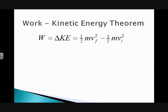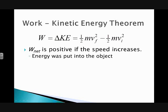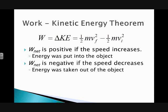The net work is positive if the speed of the object increases. That means energy was put into the object. If you put energy into it, it's going to go faster, it's going to have more kinetic energy. So net work is positive. It's negative if the object slows down, meaning we took energy out of it.